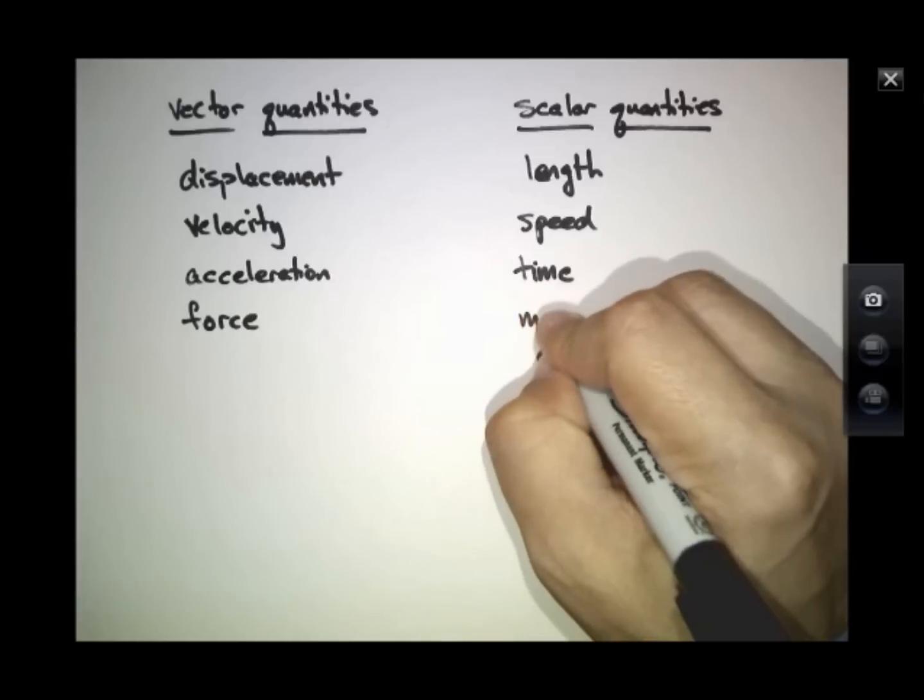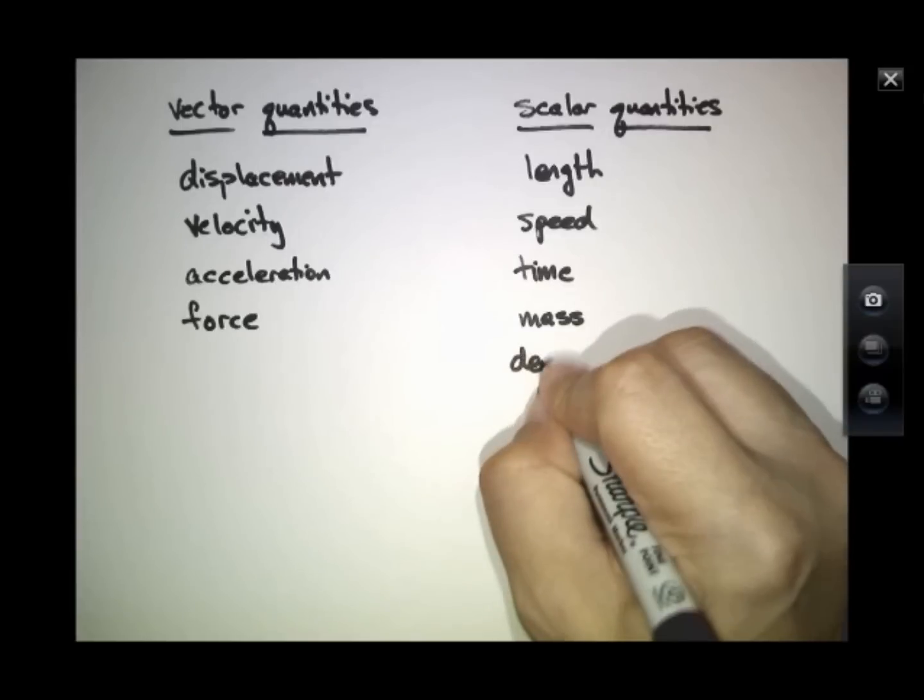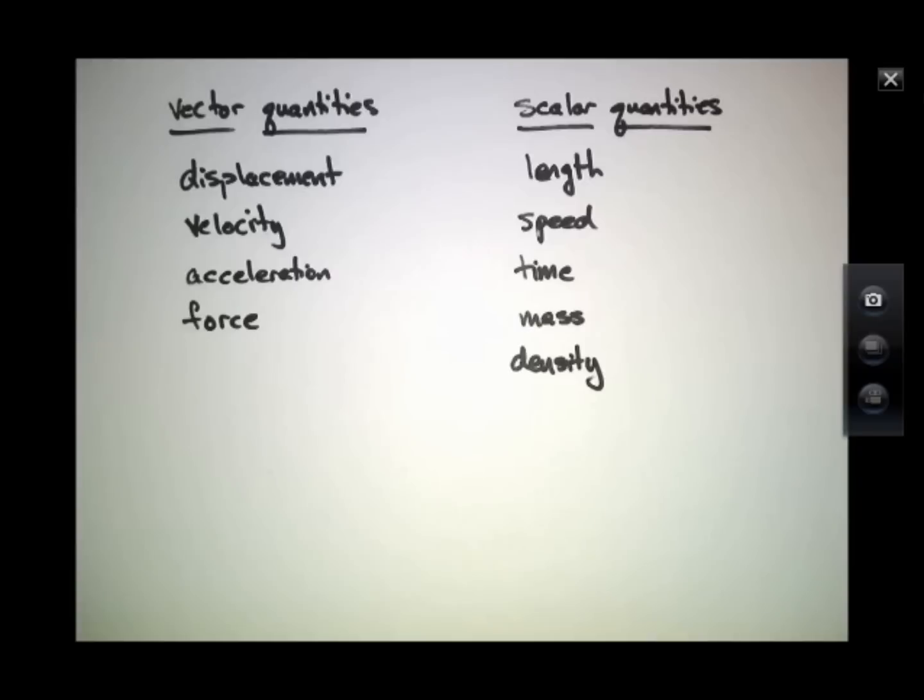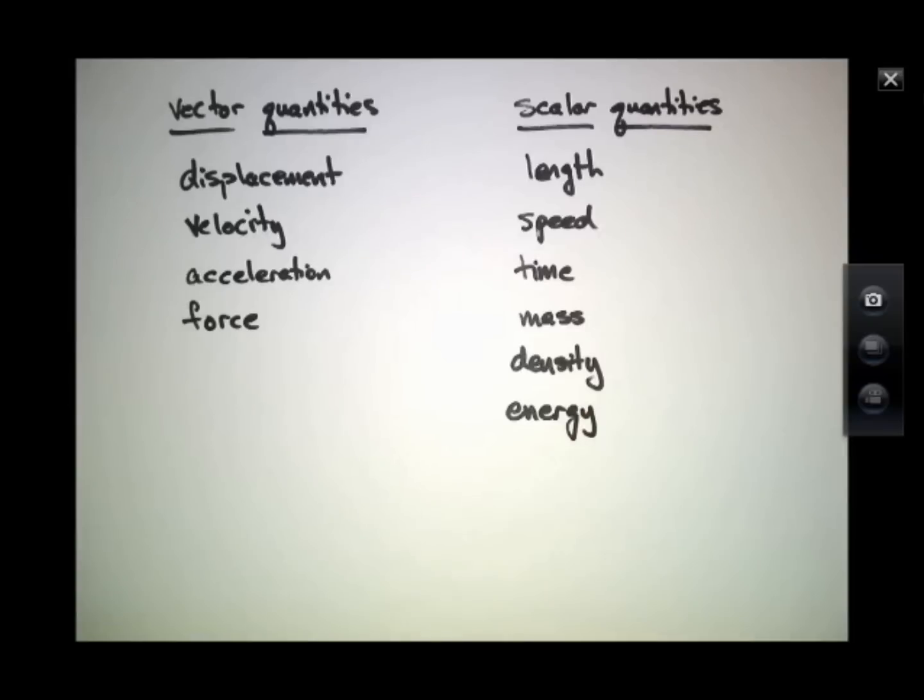Likewise, mass. How many kilograms does something weigh? Well, that's just a scalar quantity. Things like density. How many kilograms per cubic meter does something have a density of? Or energy. How many joules of energy did you use up today? All of those are scalar quantities.